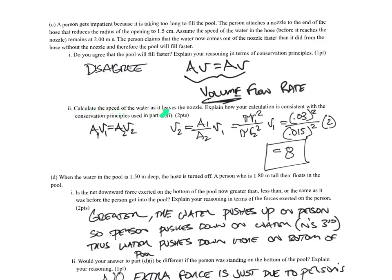Second thing, calculate the speed of the water as it leaves the nozzle. Explain how your calculation is consistent with the conservation principles used in part C1. So A1 times V1 equals A2 times V2. So I got a new velocity of 8, whereas before it was moving slower. How is this consistent? So the area times the velocity will equal my volume. And so even though it is moving faster, it is not actually going to be going any additional volume would not be coming out in the same amounts of time.